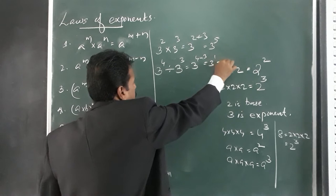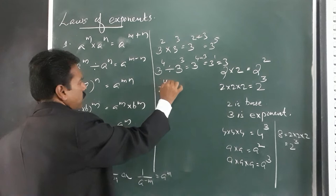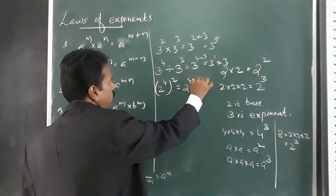Example three: 2 raised to 4 into 2 raised to 2 — that is 2 raised to 8, using the product rule for same bases.